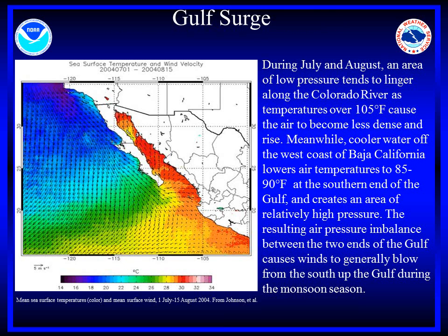The Gulf of California acts as an important moisture source to the summer monsoon. During July and August, an area of low pressure tends to linger along the Colorado River Valley as temperatures easily soar over 105 degrees, which causes the air to become less dense and rise. Meanwhile, cooler water over the west coast of Baja California lowers air temperatures, allowing for the development of a relatively high pressure area. The resulting air pressure imbalance between the two ends of the Gulf causes winds to generally blow from the south up the Gulf during the monsoon season. More intense Gulf surges are difficult to forecast, but play a significant role in low level moisture advection into the desert southwest.